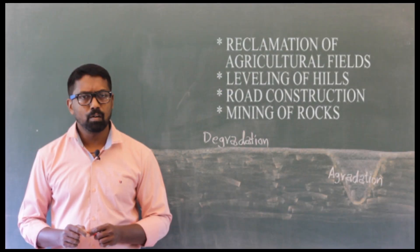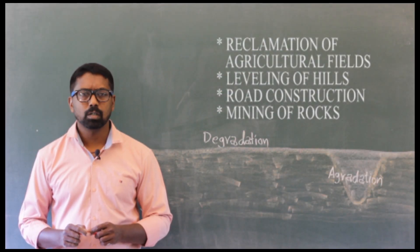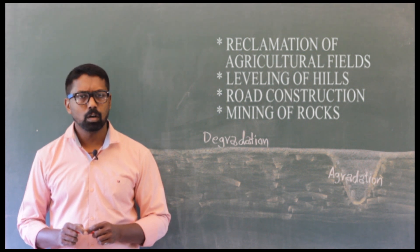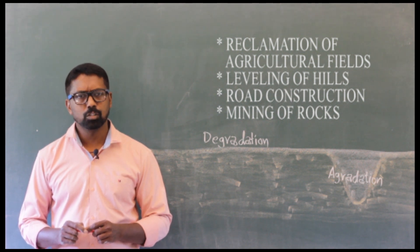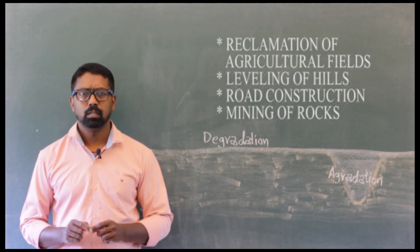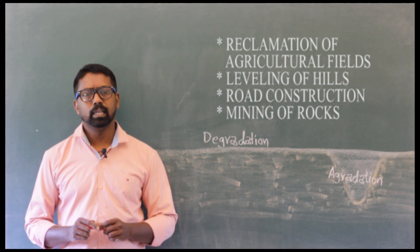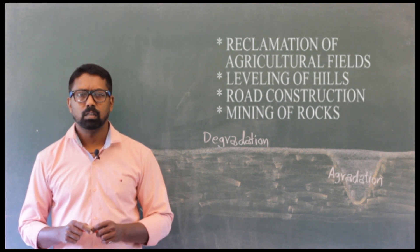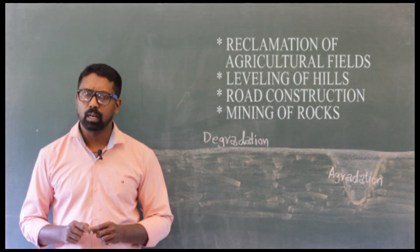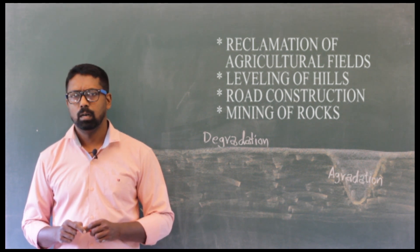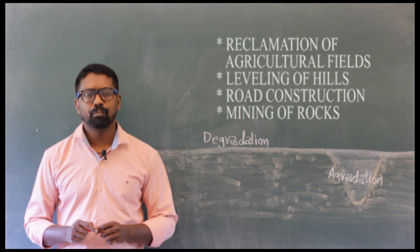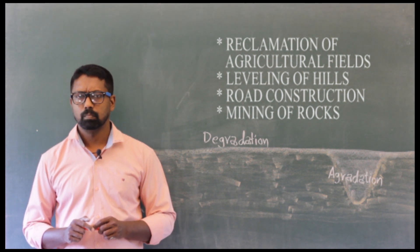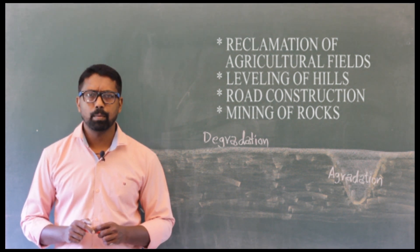Human activities that change the earth's surface include: reclamation of agricultural fields, leveling of hills, mining of rock, and terrace farming.